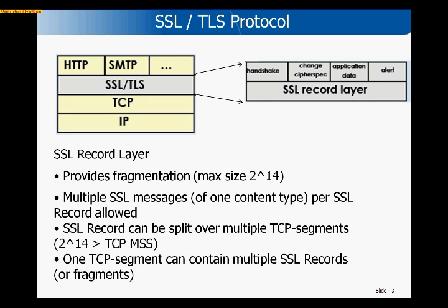SSL and TLS ride on top of TCP, and there is the SSL record layer which transports one of four message types: the handshake, change cipher spec, the alert, and finally application data. The application data typically transported is HTTP or web traffic, mail, SMTP, or SIP — Session Initiation Protocol — which are the three most common.